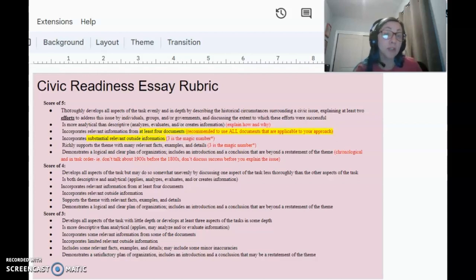You have to be more analytical than descriptive. If you're just telling me a story about what took place, you're being more descriptive and narrative. You have to explain how and why things are happening to be analytical. You have to incorporate relevant information from at least four of the documents. I always say that you should use every document you can to help you complete the task thoroughly. That's going to help you deepen your analysis. Every document given pertains to the task in some way. You also have to incorporate substantial relevant outside information. My rule of thumb is three is the magic number.